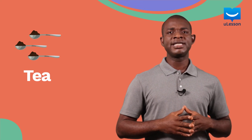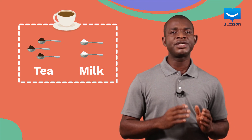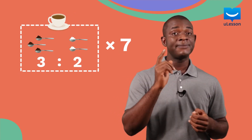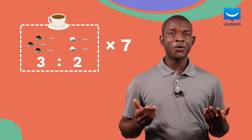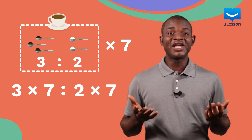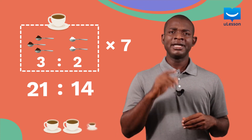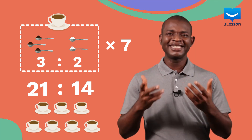Ratios can help us in multiplying or dividing things. Say for example, you need 3 spoons of tea and 2 spoons of milk to prepare breakfast for 1 person. So the ratio of tea to milk is 3 to 2. To make breakfast for 7 people, we might need 7 times that quantity. So we multiply the numbers by 7, and that will give us 21 ratio 14. Since the ratios are still the same, the breakfast should be just as tasty.